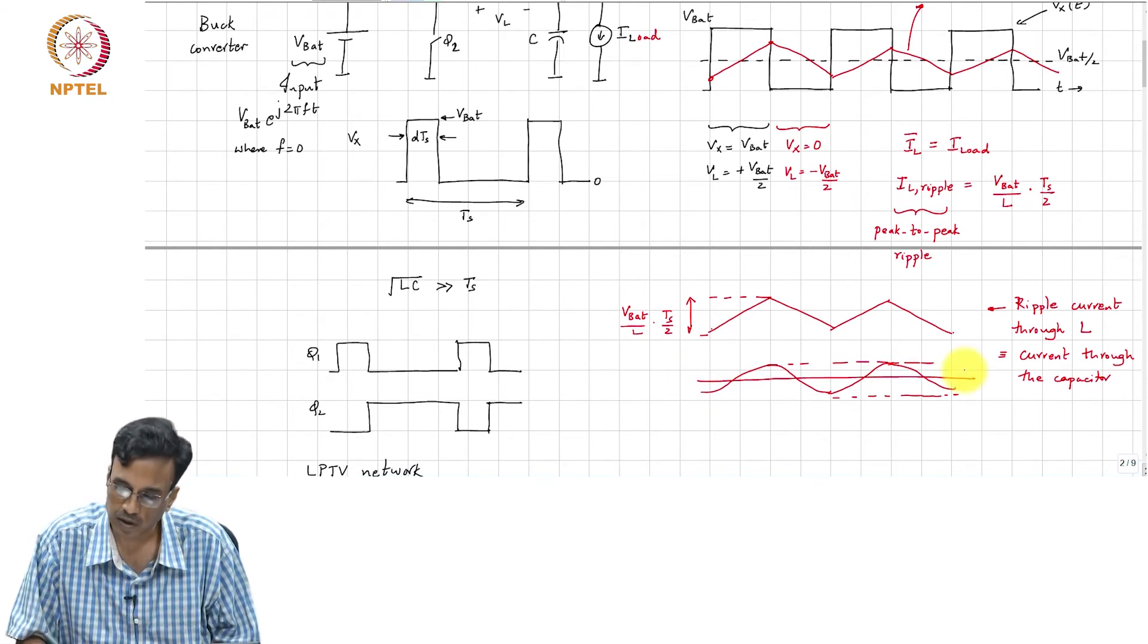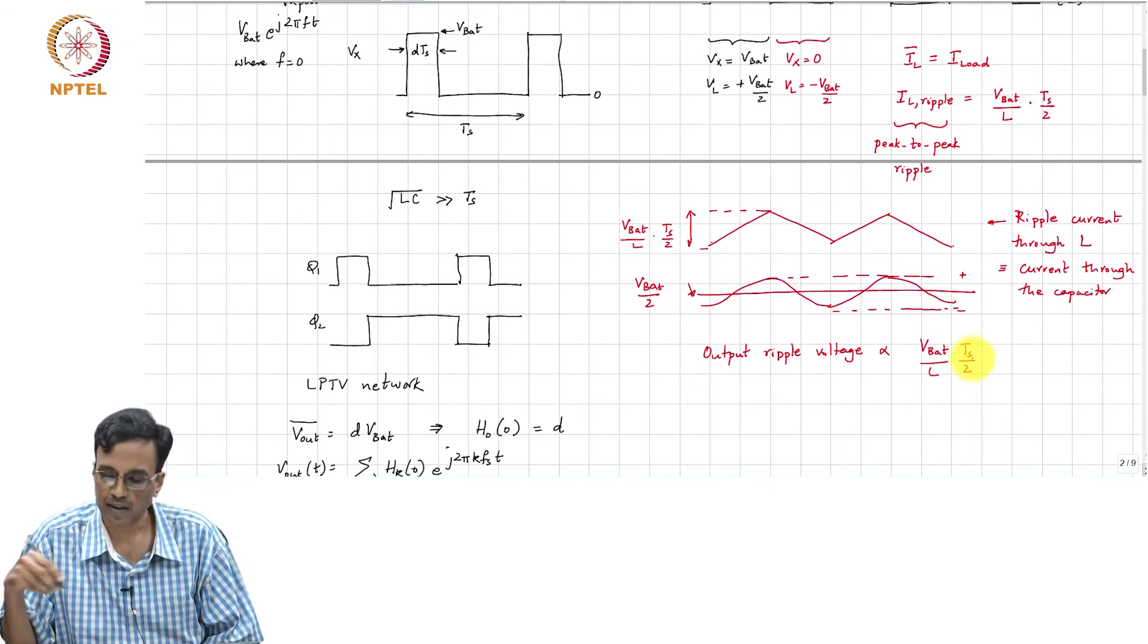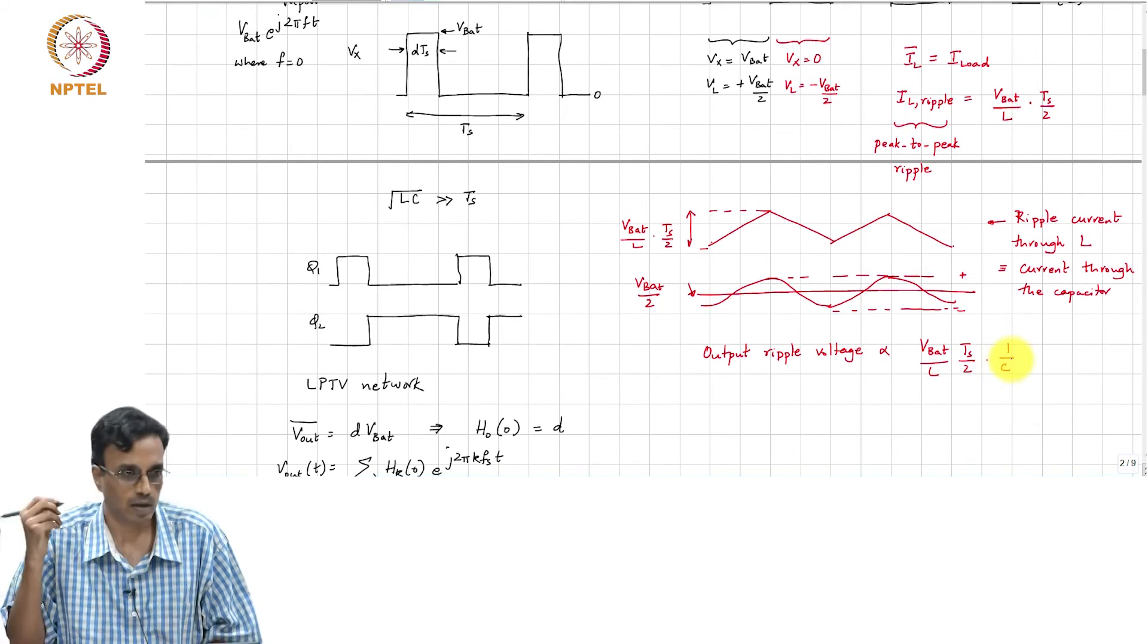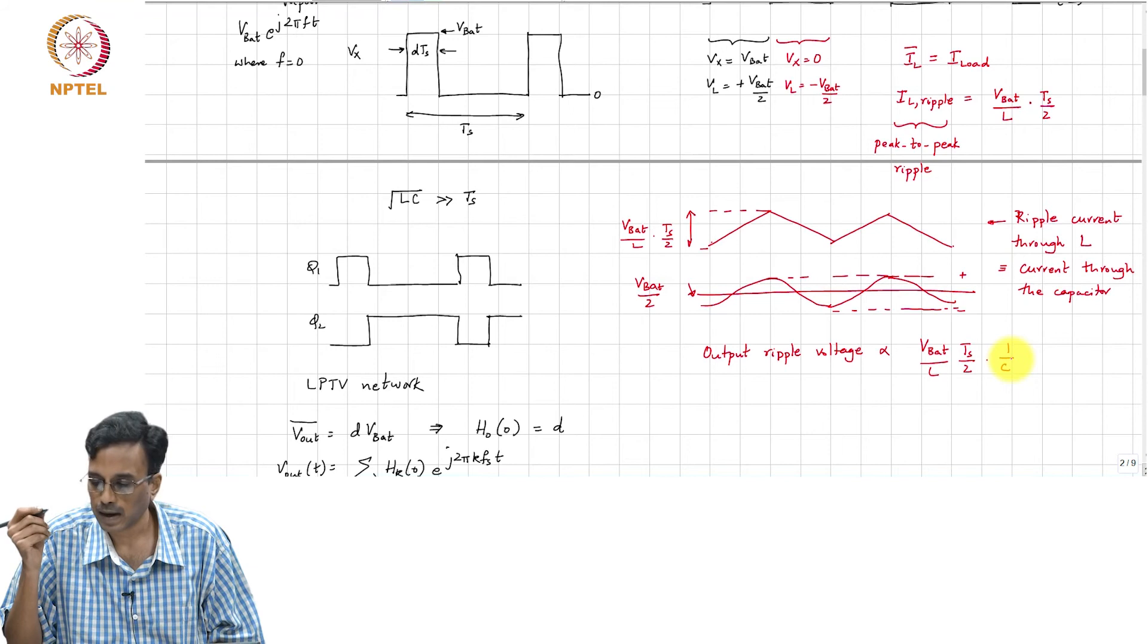And so this is the current which flows through, is the AC current flowing through the capacitor and which is the total current flowing through the capacitor, the ripple current flowing through L is the actual current flowing through the capacitor because the capacitor cannot have any average DC current flowing through. So it is the same as the current through the capacitor. So if a current like this flows through a capacitor, what comment can we make about the voltage across the capacitor? Well, it will do something like this. So this is the ripple voltage. So the capacitor voltage will have a constant value, the average value of the capacitor voltage is nothing but V_bat by 2. On top of it there will be a ripple.